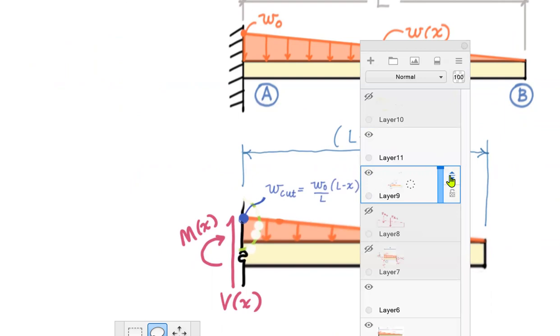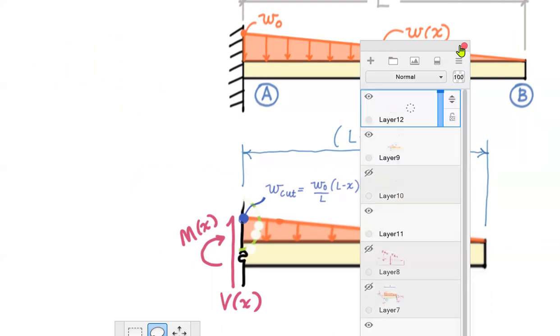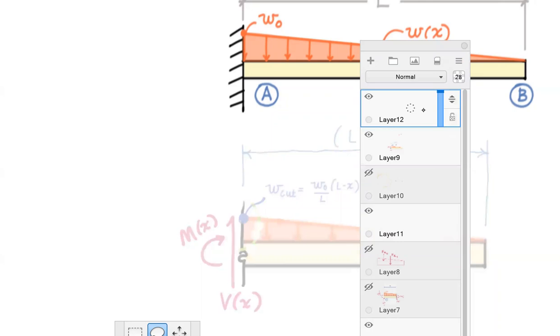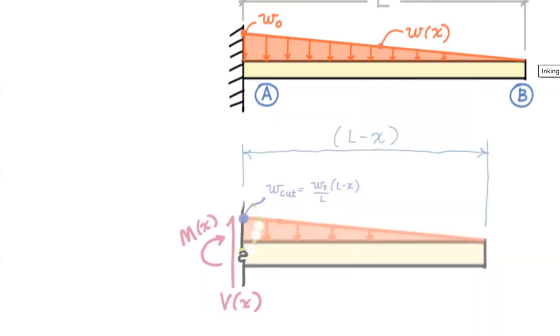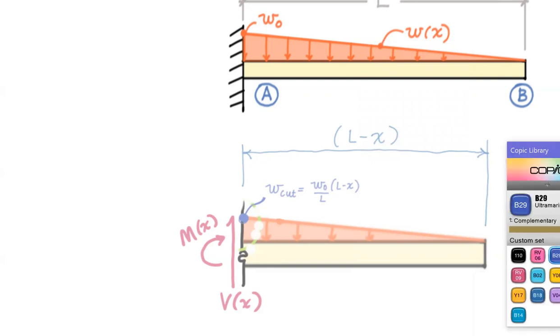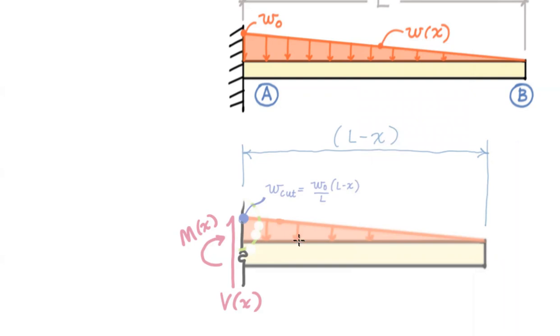We are ready to rock. What we want to do is convert that area under the triangle into an equivalent concentrated force. I'll draw it right there. I'll label that F_r. And it's equal to the area under the curve.